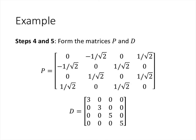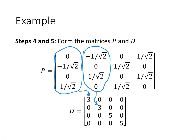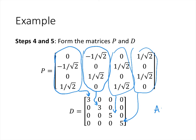The final steps are to form the matrices P and D. Matrix P has as its columns the orthonormal basis vectors constructed in the previous step. Matrix D is diagonal, with diagonal entries being the eigenvalues corresponding to each column of P. The first two columns correspond to lambda equals 3, and the last two correspond to lambda equals 5. This is our orthogonal diagonalization, and we can verify that A equals P times D times P inverse, which is the same as P times D times P transpose.